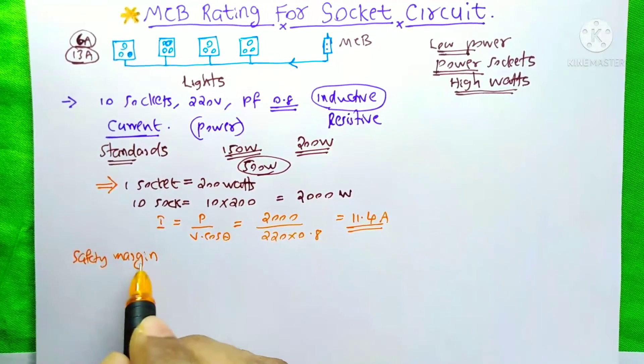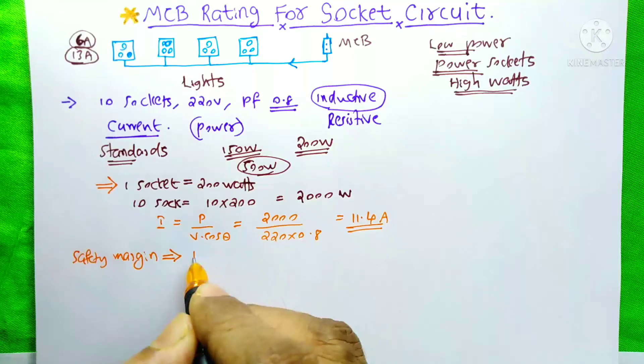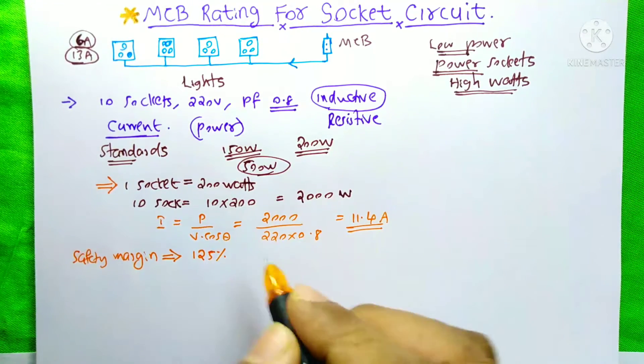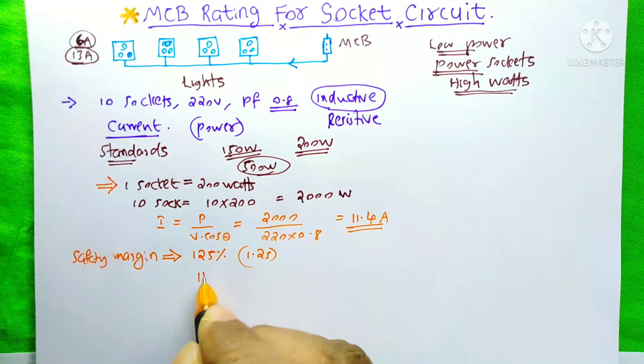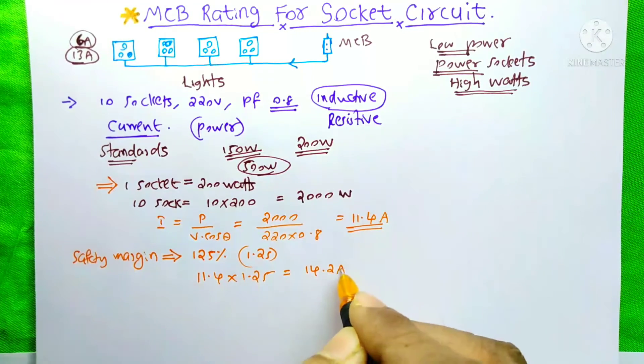We need to give a safety margin for our MCB. Usually we give 125%, that means a 1.25 numerical value. That means 11.4 Ampere into 1.25. So the answer is 14.2 Ampere.